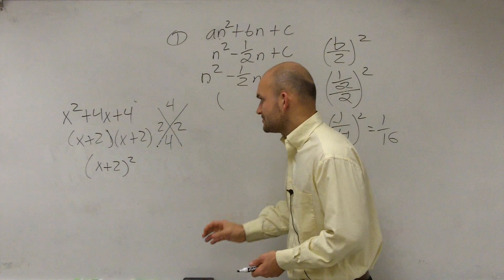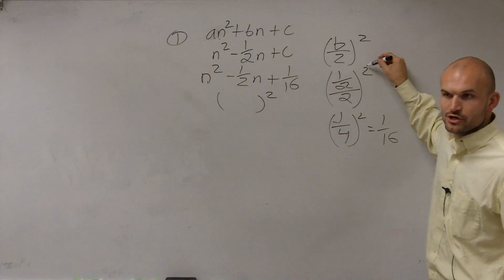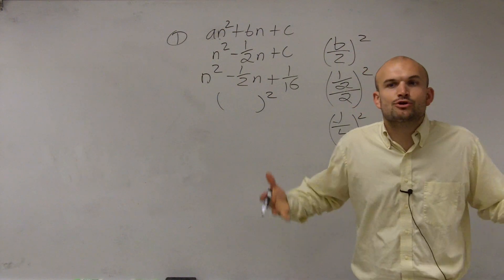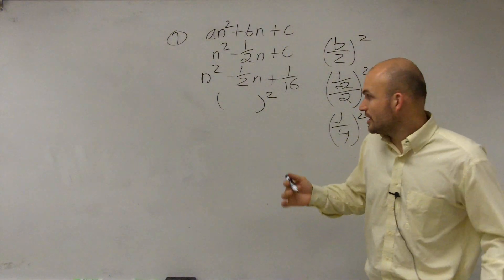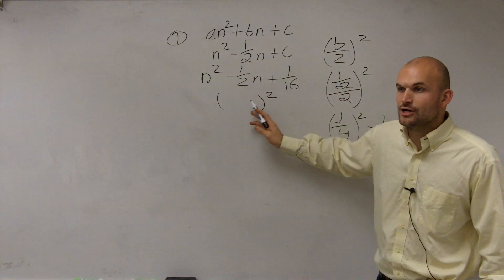So when I do the b divided by 2, guess what I create? I create a perfect square trinomial. Therefore, I can rewrite this as a binomial squared.